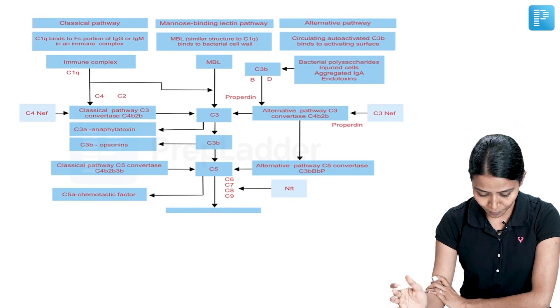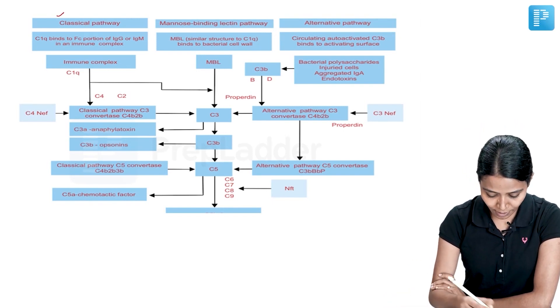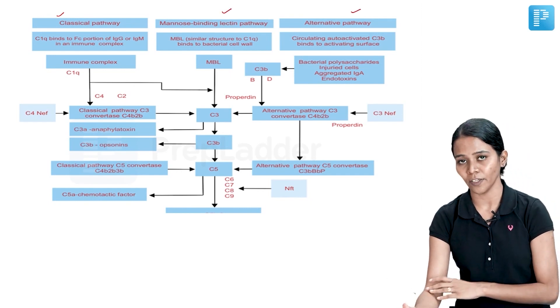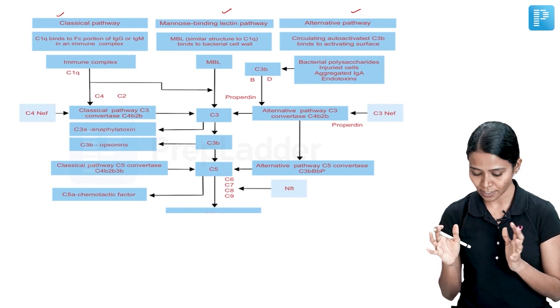Normal complement pathway. There can be three pathways: one is classical pathway, the second one is mannose binding lectin pathway, the third one is alternative pathway. So by these three pathways, the complement can get stimulated.